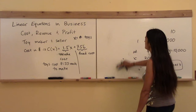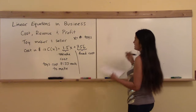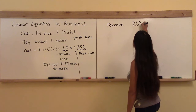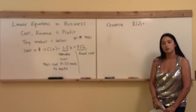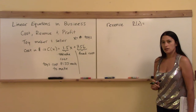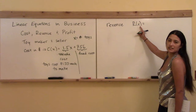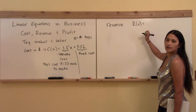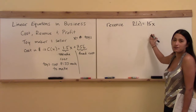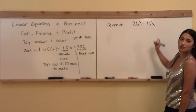The revenue part: I'm going to sell these toys for $15 each. The revenue function R(x) equals 15 times X — if I sell 10, I make $150; if I sell 1, I make $15. It's just $15 times how many I sold. That's my revenue function, and it's linear because it just has X to the first power.